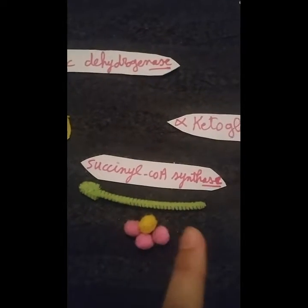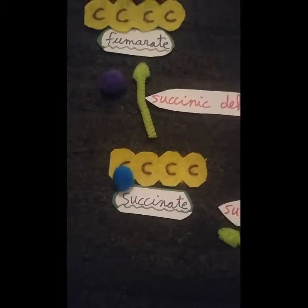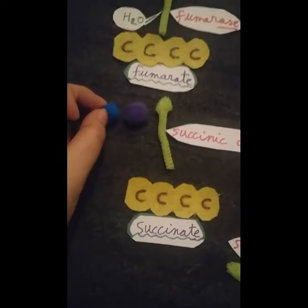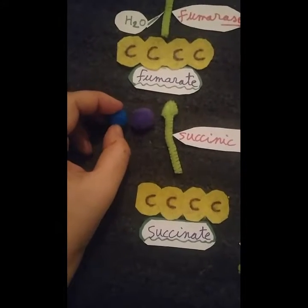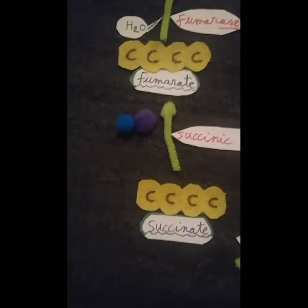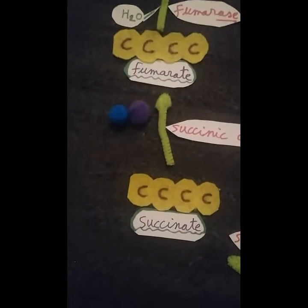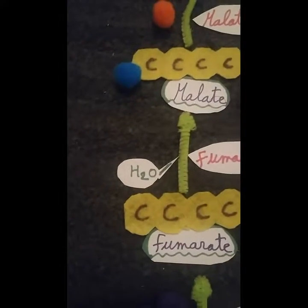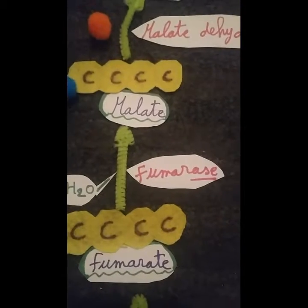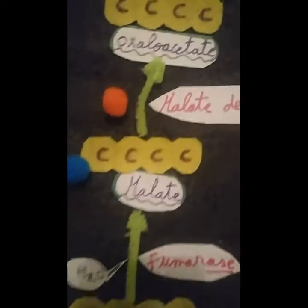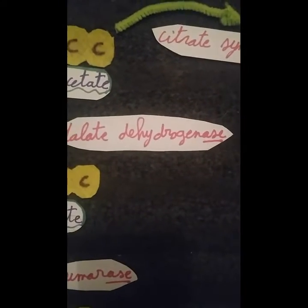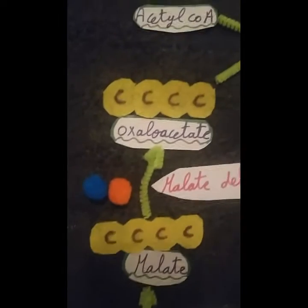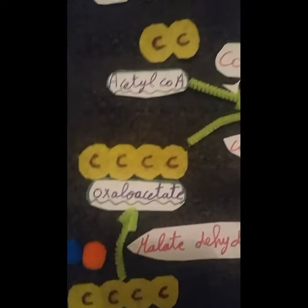ATP is released, and succinyl-CoA synthetase converts succinyl-CoA to succinate. Then succinic dehydrogenase removes one hydrogen from succinate and adds it to FAD — producing FADH. Each FADH produces two ATPs. This converts succinate to fumarate, a four-carbon molecule. A water molecule is added by fumarase to convert fumarate to malate. Then malate dehydrogenase removes hydrogen from malate and adds it to NAD, producing NADH. The product is oxaloacetate, which continues the cycle again.